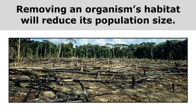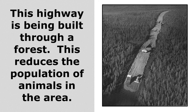Another way that humans can harm organisms is by taking away their habitat. Removing an organism's habitat will reduce its population size. Here you see that these trees have been chopped down, and deforestation is a huge problem that really harms forest ecosystems. A highway being built through a forest reduces the population of animals in the area because their habitat and food source are being taken away.